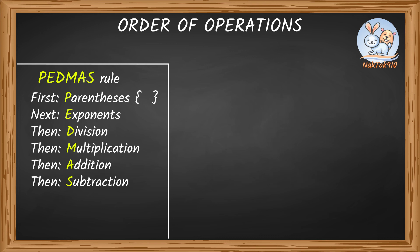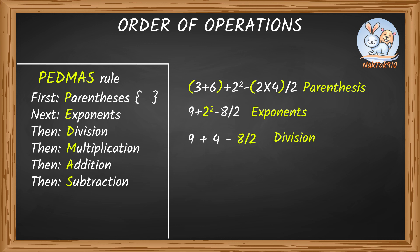Here, try this: 3 plus 6 plus 2 squared minus 2 times 4 divided by 2. First is parentheses. So 3 plus 6 is 9, and 2 times 4 is 8. So 9 plus 2 squared minus 8 divided by 2. Next is exponents. So 9 plus 4 minus 8 divided by 2. Now division: 9 plus 4 minus 4. Then addition and subtraction. So 13 minus 4 gives us 9. See?